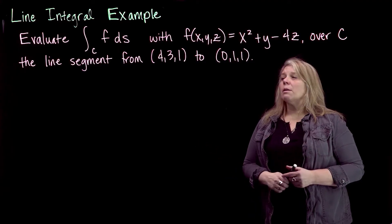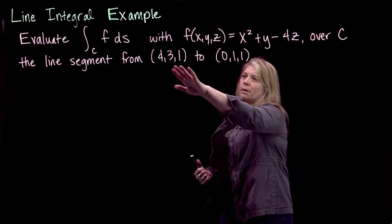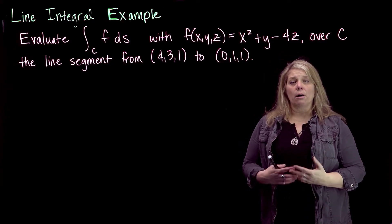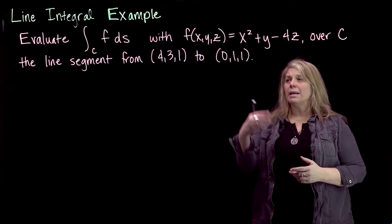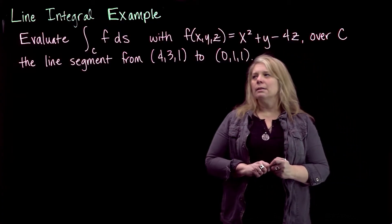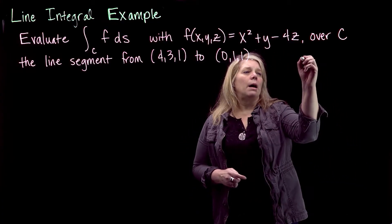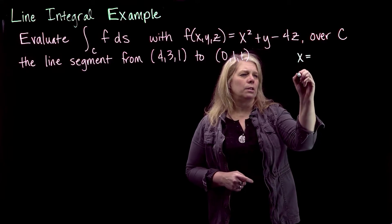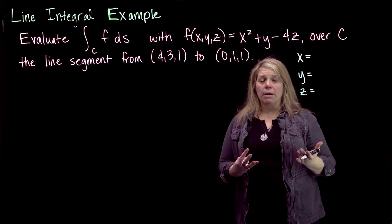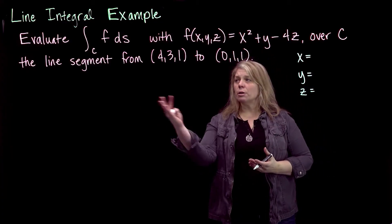So I need to start with a parameterization of this line segment from (4,3,1) to (0,1,1), and the direction that you go along the curve is important. We did line segments a long time ago, and we've reviewed them a little bit since we first did them, but I need to write parametric equations for this line. Sometimes you have parametric equations for the curve given to you, but here I don't.